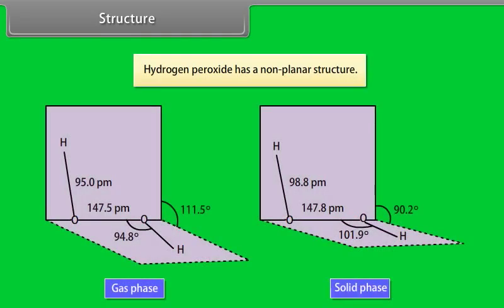Structure: Hydrogen peroxide has a non-planar structure. In gas phase, dihedral angle is 111.5 degrees. In solid phase, at 110 Kelvin, dihedral angle is 90.2 degrees.